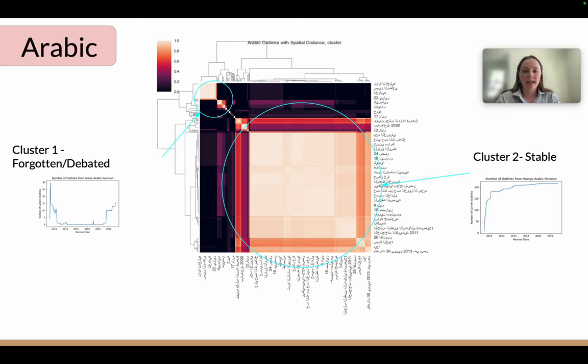Arabic has a distinctly different cluster structure with only two structures. This could be due to the amount of edits. This could be due to the size of editors within Arabic Wikipedia. This is also part of our future work to look at this.